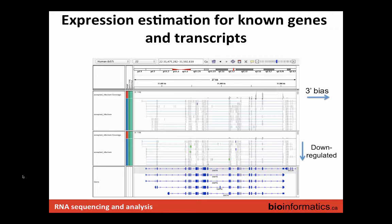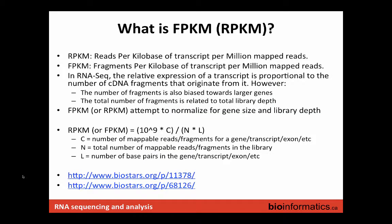It's biased towards the 3-prime end. You could say maybe this is a down-regulated gene because you have more coverage in the top condition than in the bottom condition. But as we said yesterday, that's a little bit of an oversimplistic view of things — it's not really statistically solid, so we do need a formal approach to this.